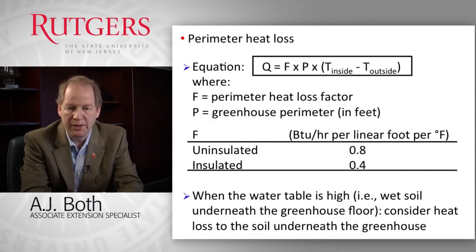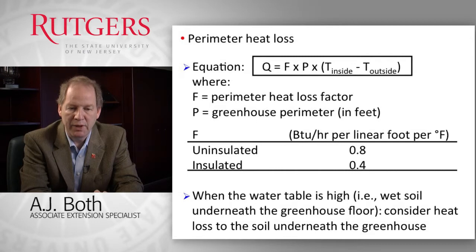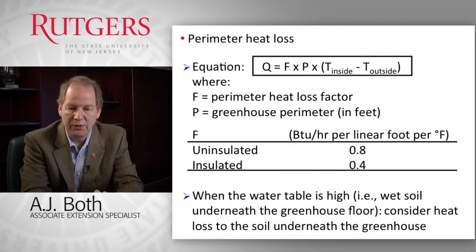Perimeter heat loss is calculated using the perimeter heat loss factor multiplied by the greenhouse perimeter in feet, then multiplied by the temperature difference between the inside set point and outside design temperature. The perimeter is easily calculated from the greenhouse design, and the perimeter heat loss factor is determined from a table depending on whether the perimeter is insulated or not.